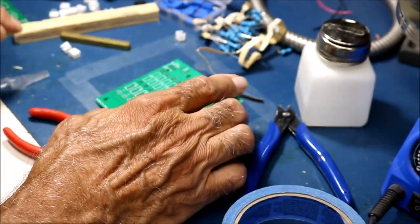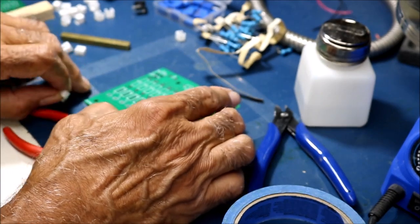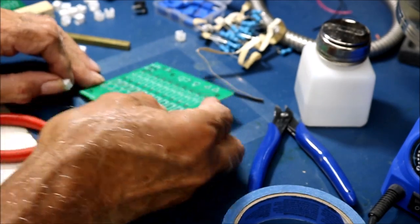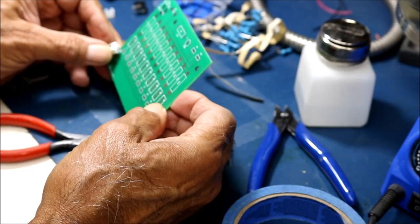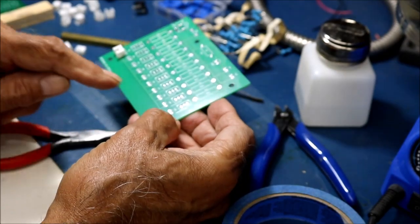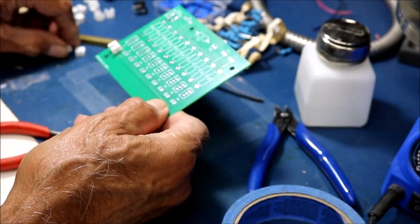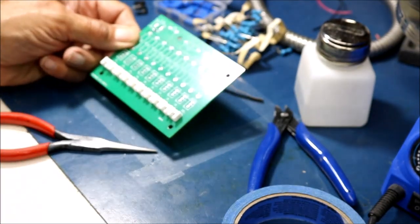Now the first thing I'm going to do is install the JST connectors which you see right here. I'm going to put each one in this orientation like that. I'm going to put all the rest of them, the other nine, right in a row, and then I'll show you what we're going to do with those.